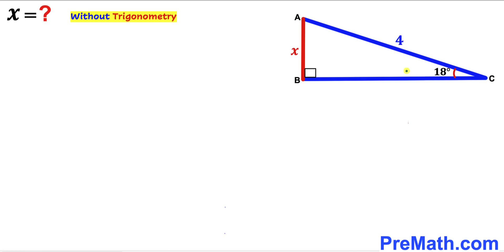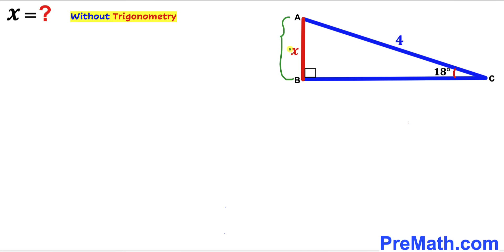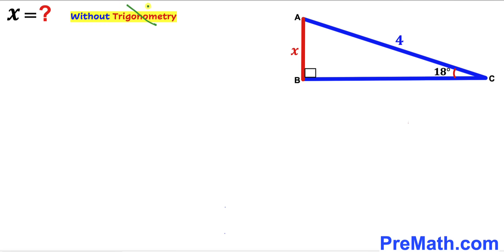Welcome to PreMath. In this video we have a right triangle ABC such that angle ACB is 18 degrees. The hypotenuse of this right triangle is 4 units whereas leg AB is represented by x, and our task is to find the value of x — the length of leg AB — without using trigonometry.